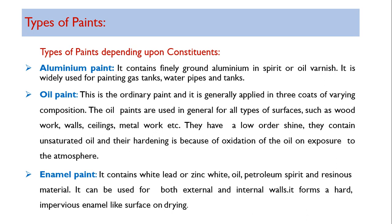Enamel paint contains white lead or zinc white, petroleum spirit, and resinous material. It can be used for both external as well as internal walls. It forms a hard, impervious, enamel-like surface on drying, which is why this paint is called enamel paint.